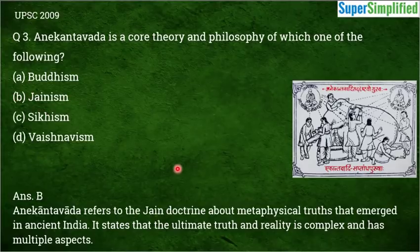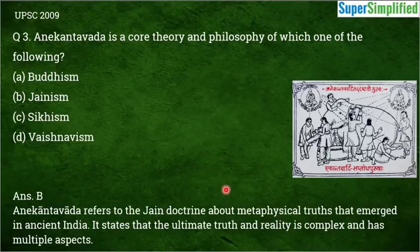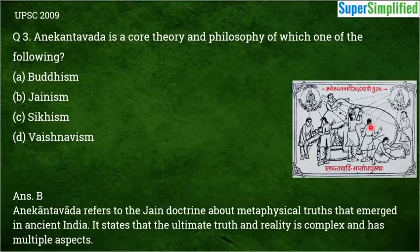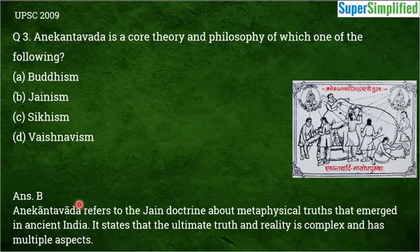In Jainism, the concept of Anekantwaad states that truth and reality have many aspects — your perspective on reality can differ from another person's perspective. There is a well-known story: six blind people try to touch an elephant and describe it. One grabs the trunk and says it is like a tube; one touches the stomach and says it is like a wall; one holds the leg and says it is like a pillar. They each describe it differently, but the reality is different from any single description. That is the essence of Anekantwaad — reality has many aspects.